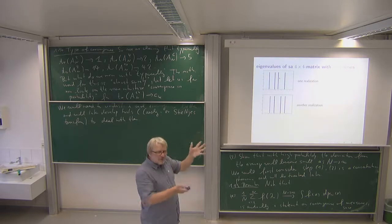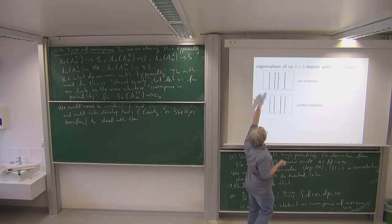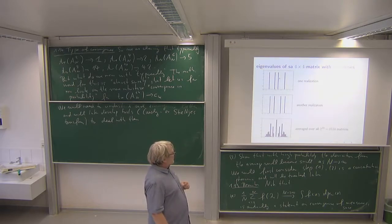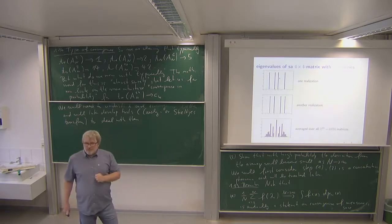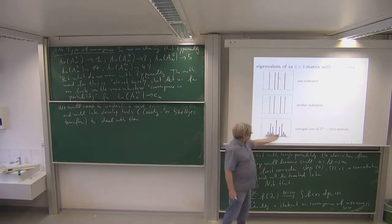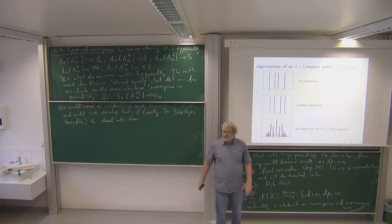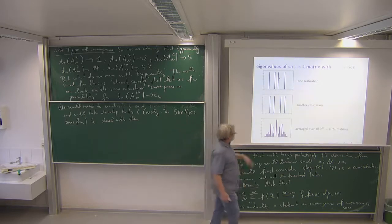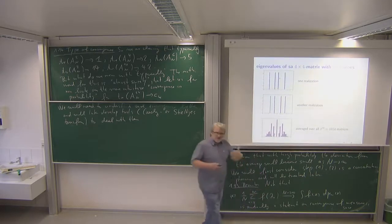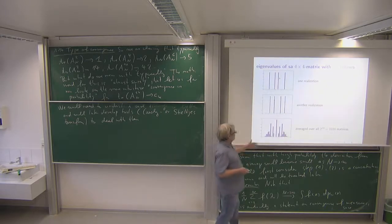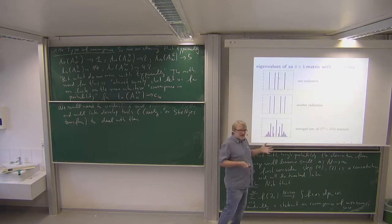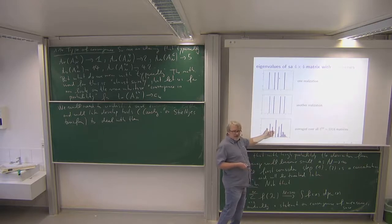For four by four matrices, there are 2^10 = 1024 matrices with ±1 entries in a symmetric way. I can average over all their eigenvalue distributions. You already see some structure in the average — more than in any single realization. For 10 by 10 matrices, there are 2^55 possible matrices. I took 50,000 random ones and averaged over them. You see the average already shows the shape of the semicircle, even for 10 by 10 matrices, while individual realizations with only 10 eigenvalues show nothing.